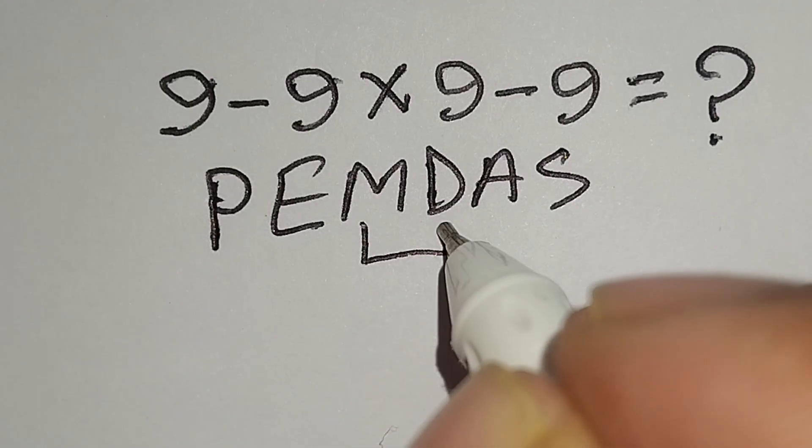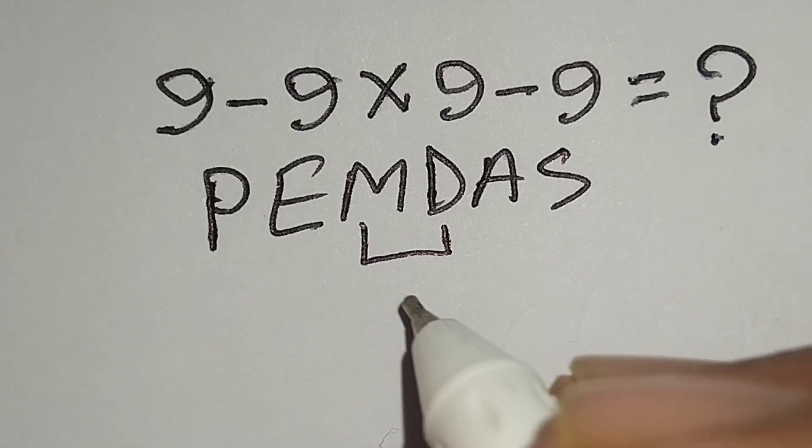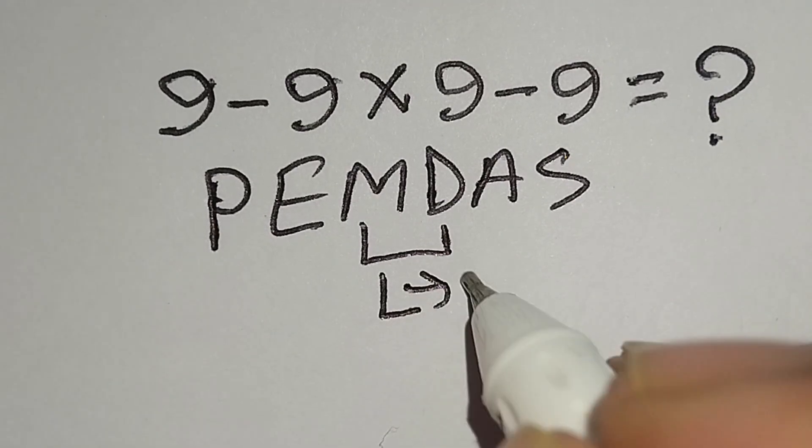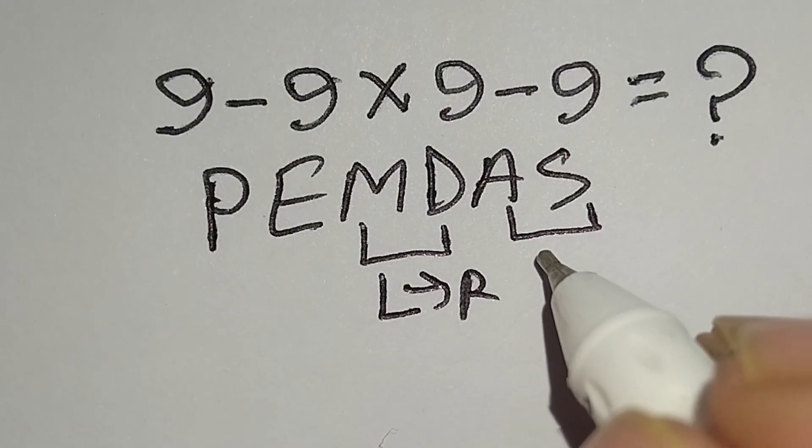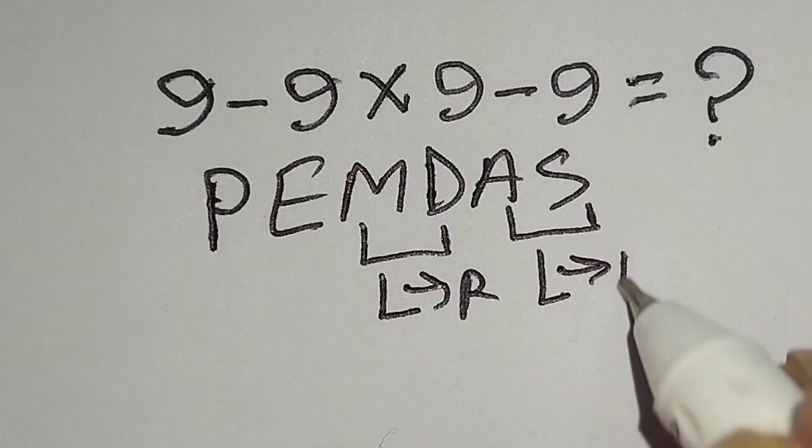Remember multiplication and division have same priority. For this we have to work left to right. And addition and subtraction have same priority. For this we have to work left to right also.